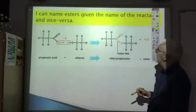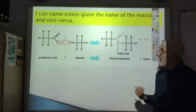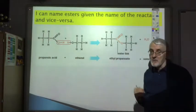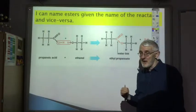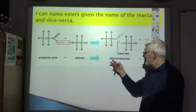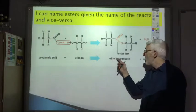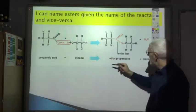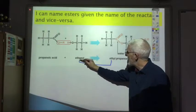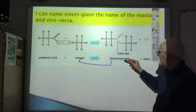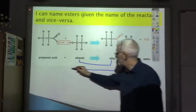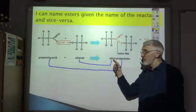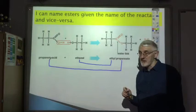The next learning outcome is that you should be able to name an ester given the reactants, or vice versa. The name of the ester has two parts: the first part comes from the alcohol — so it's 'ethyl' because we used ethanol — and the second part comes from the carboxylic acid — so it's 'propanoate' because we used propanoic acid.